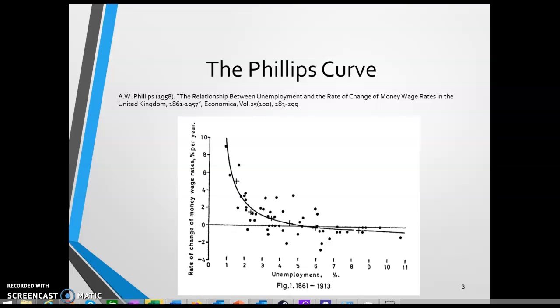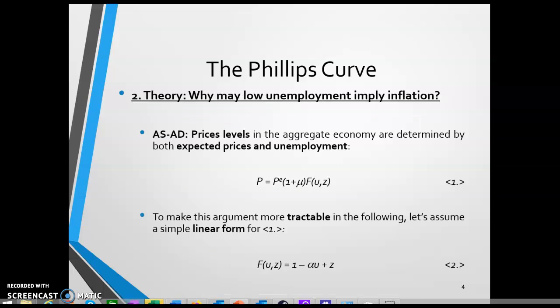From about 1861 to 1913, in any given year where the unemployment rate in Britain was low, inflation rates were relatively high. In any given year where the unemployment rate was high, inflation rates were either low or potentially even negative. Phillips didn't have inflation data the way we understand it today — what he had was nominal wage data, but nominal wage data is closely related to consumer price inflation.